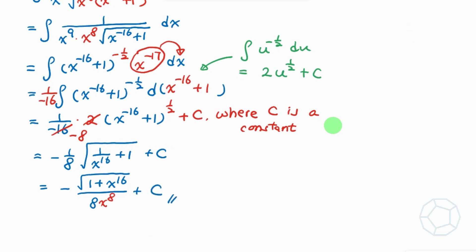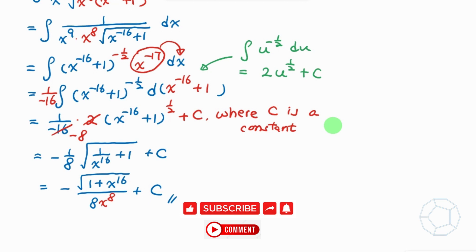This further simplifies to negative the square root of 1 plus x to the power of 16, in the numerator, over 8 times the square root of x to the power of 16 — which is x to the power of 8 — in the denominator, plus c. This is the simplest form of the answer for this difficult integral. I hope you enjoyed this video. Please give me a like, share, and subscribe to my channel. I'm happy to see your comments below. I'll see you next time. Bye!